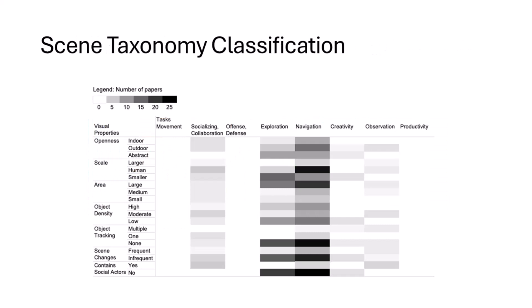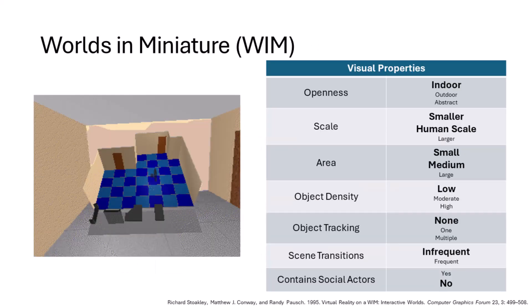One of the potential uses of our taxonomy is for the classification of existing scene viewing techniques. This heatmap shows an overview of scene viewing techniques in the research literature, which highlights gaps in our current research efforts. To get a better understanding of how we did the classification, let's use the worlds in miniature technique as an example. We can see that based on our taxonomy, worlds in miniature was developed for small or human-scale indoor environments with low object density, no object tracking, infrequent scene transitions, and no social actors.